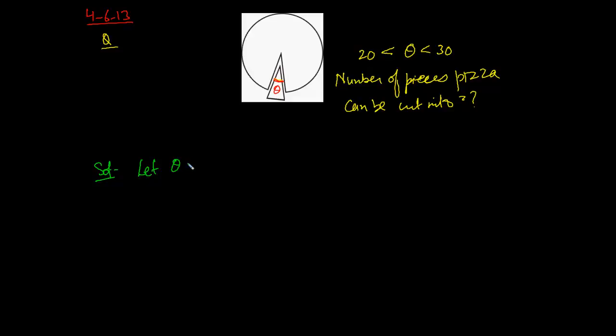For example, if we take theta equals 25, then how many pieces would be cut? If we have the total angle is 360 and we are cutting each piece into a 25 degree angle, the total number of pieces possible would be 360 divided by 25, which is 14.4 pieces.